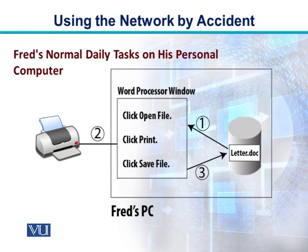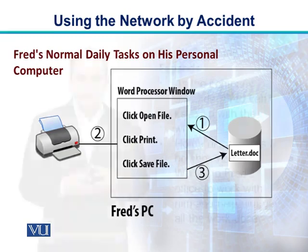In step one, he opens up a file — the file will be fetched from the hard disk, let's say the file name is letter.doc. Then in the word processor, he asks the printer to print a copy. After printing, in step three, he saves the file back to the hard disk.